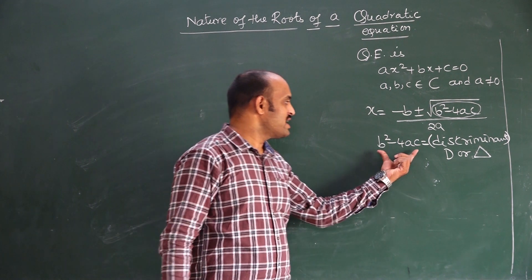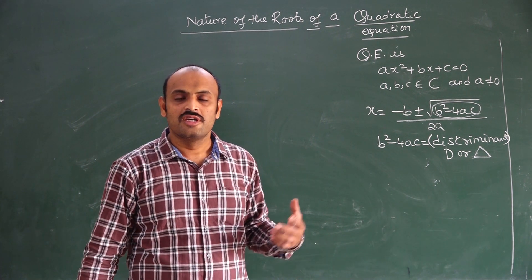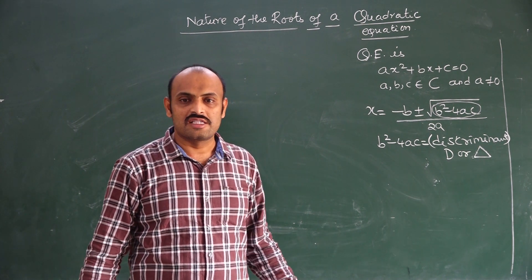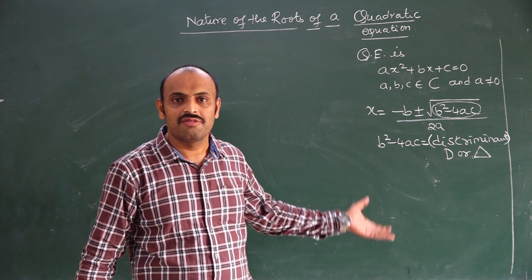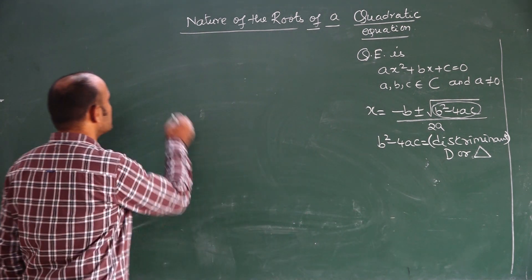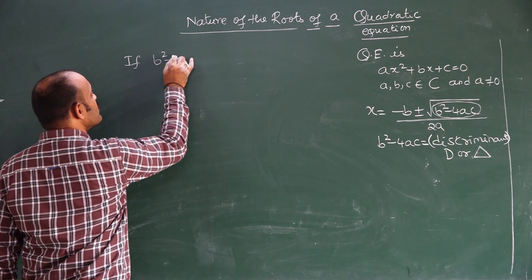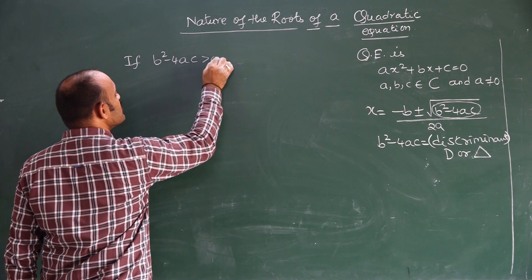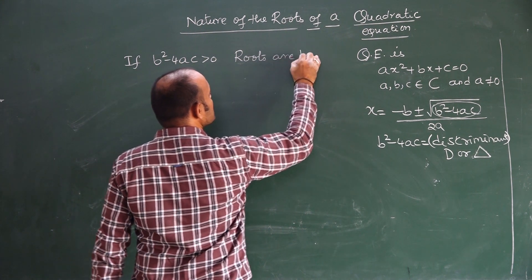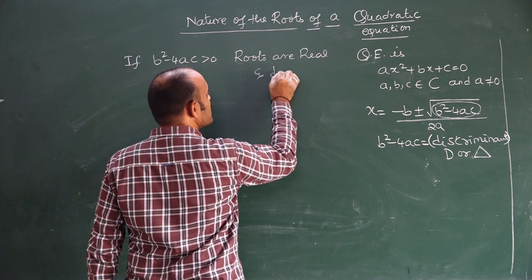If B²−4AC is greater than 0, or B²−4AC is equal to 0, or B²−4AC is less than 0 — we have three kinds of outcomes. If B²−4AC is greater than 0, roots are real and different.